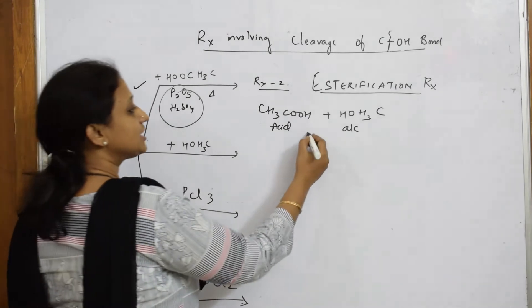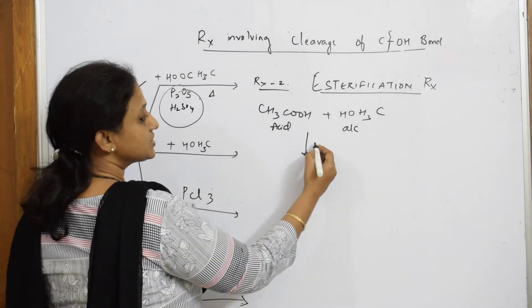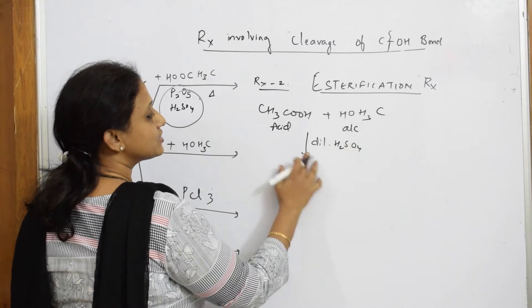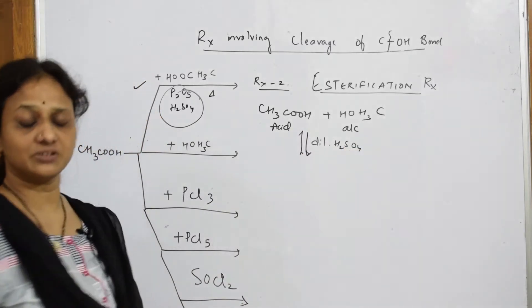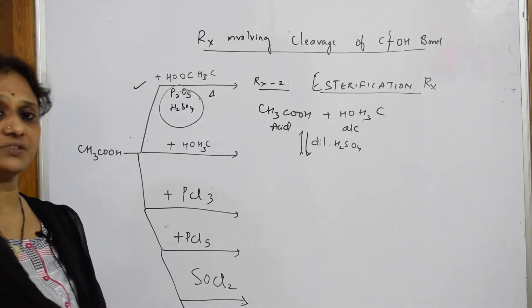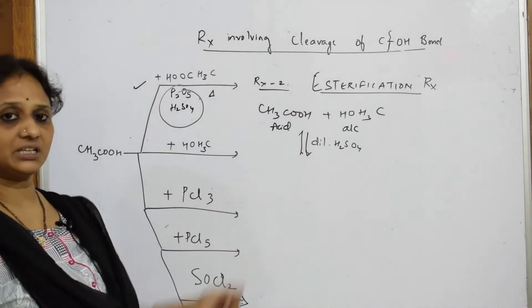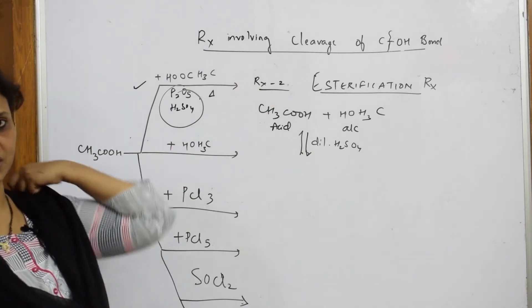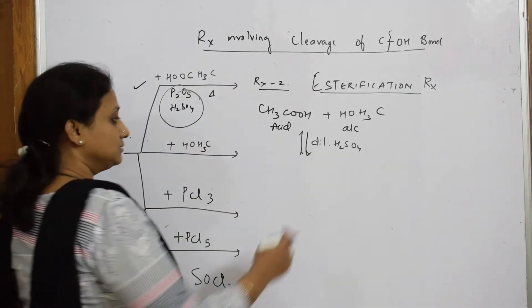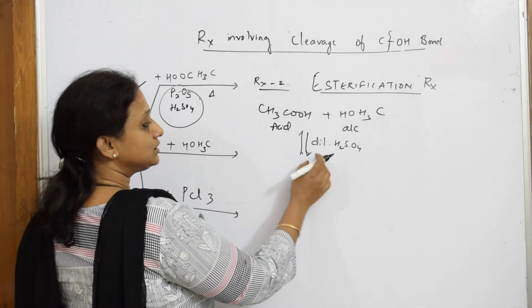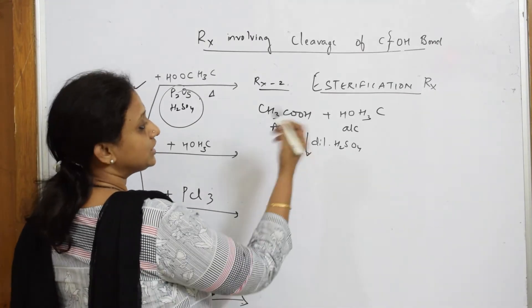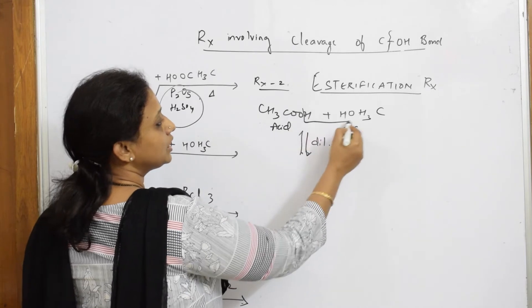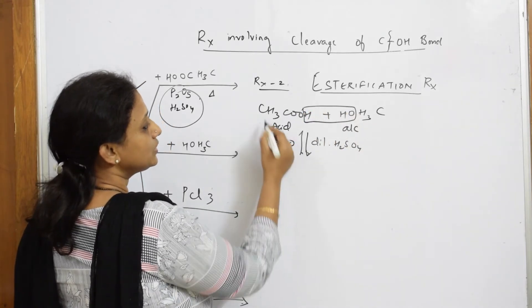Esterification reaction: same concept. You are adding dilute sulfuric acid to this and this is a reversible reaction. All esterification reactions are reversible. That is why we add sulfuric acid to get the forward ester formation, not backward reaction where you get acid and alcohol again. The role of sulfuric acid is to form the products. Cleave the bond, pick up H from here and OH from here. Remove water.